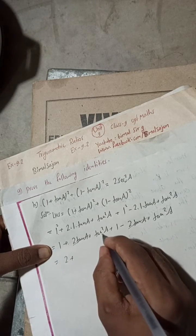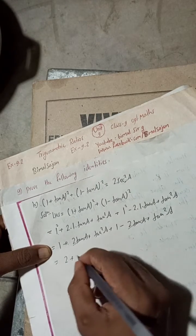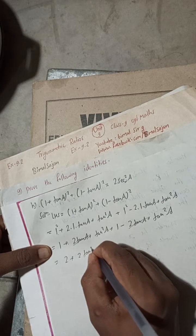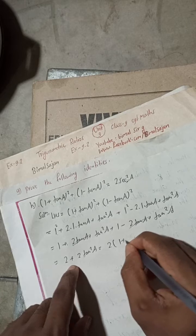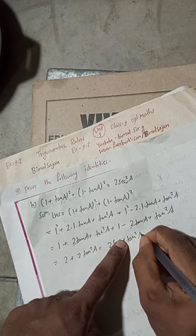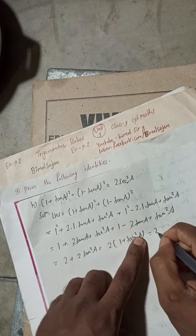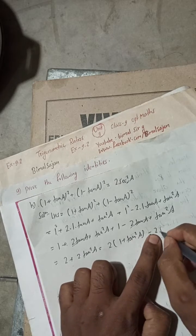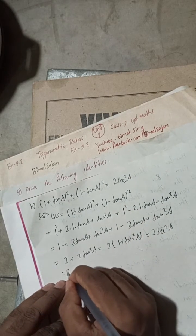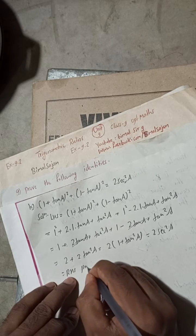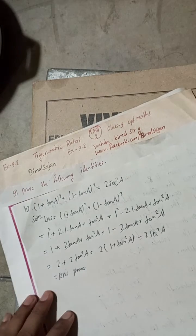This is 2 tan² a. Take 2 common, and this will be 1 + tan² a. And 1 + tan² a is equal to sec² a, so 2 sec² a. This is equal to RHS, proved.